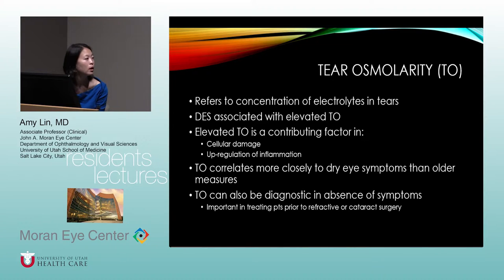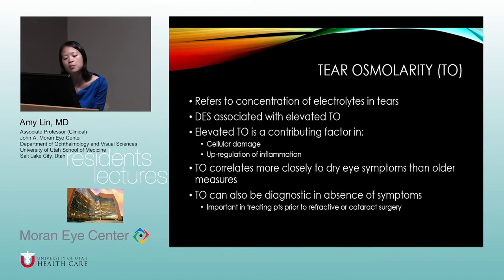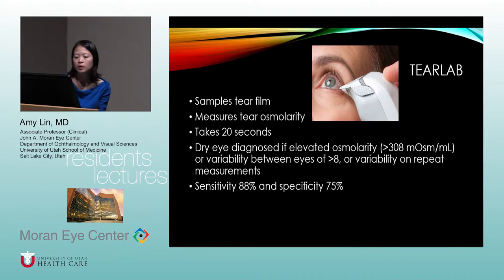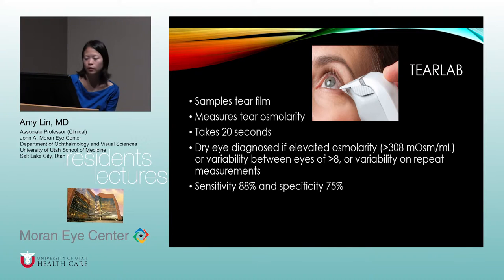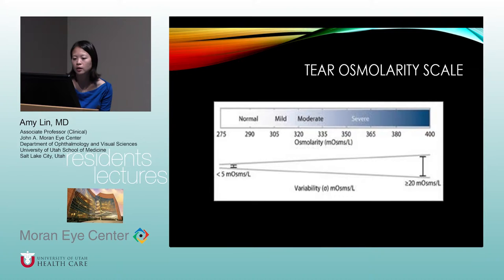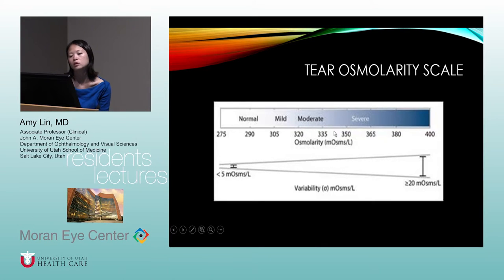With Tear Lab, you sample the tear film by touching the tip to the lateral canthal area — it takes about 20 seconds. Dry eye is diagnosed if osmolarity is greater than 308, if there's variability between eyes of greater than 8, or if there's variability on repeat measurements. The test has a sensitivity of 88% and specificity of 75%. Osmolarity above about 305 indicates mild dry eye, with higher numbers indicating more severe disease.